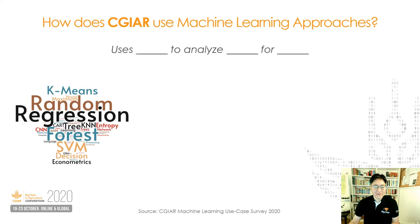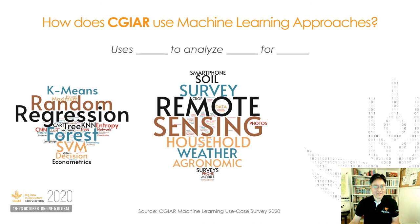Here you can see there are a lot of different analytical methods being used, from random forest, regression, classification, and neural net. Our colleagues said they need to use these methods to analyze large volumes of data from, for example, satellite remote sensing, household surveys, agronomic trials, and soil and weather data.